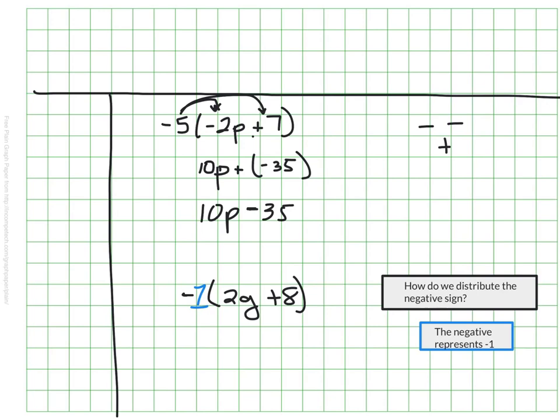It might help if we write it that way. Now I know this is negative 1 times 2g plus 8, and then I can just proceed the way that we've done in the previous questions. I have to multiply negative 1 times 2, which means it's a negative 2g. And I'm going to add that to my negative 1 times 8, which is a negative 8. You might see it written this way, but it could also be negative 2g minus 8, because adding a negative is the same as subtracting 8.